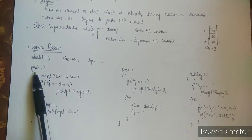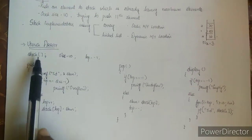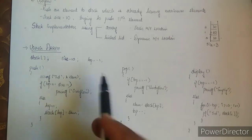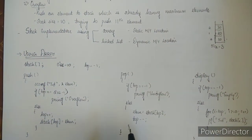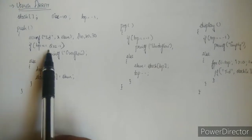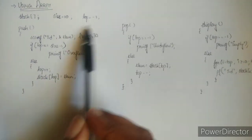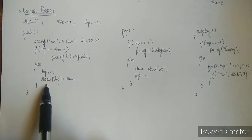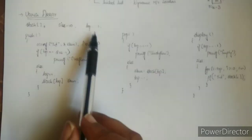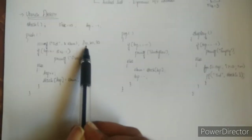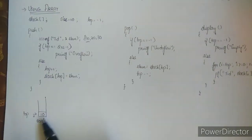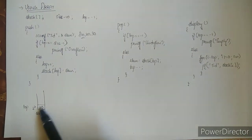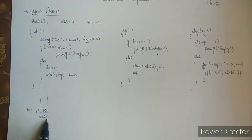Let's walk through what the push operation does. We are reading an element — say 10, 20, and 30. If top equals size minus 1: top is minus 1, so this condition fails and we go to else. Top++ makes top 0, then stack[top] = element, so element 10 is inserted. Top is incremented first, then element 10 is inserted into the stack array.